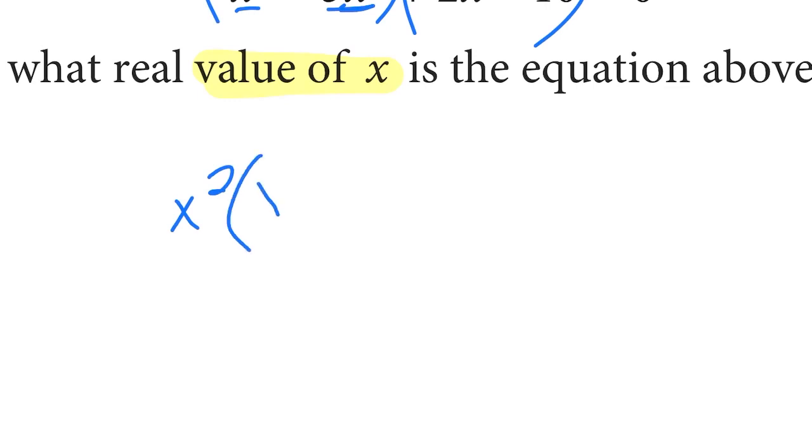So here, both terms have at least an x squared, we can factor out an x squared from that first factor, leaving us with x minus 5.